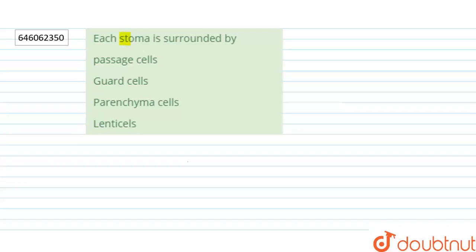The question says that each stoma is surrounded by: passage cells, guard cells, parenchyma cells, or lenticels.